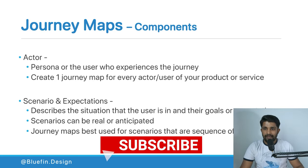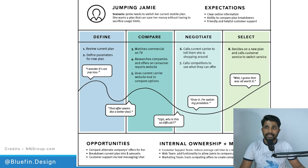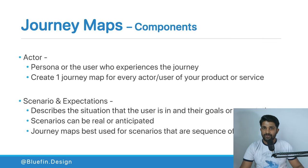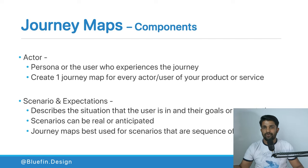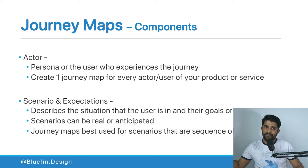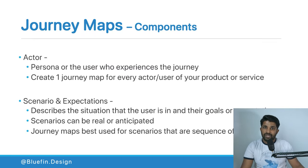The next component is the scenario and the expectation. The scenario is the situation that the user is actually in, along with their goals. These scenarios can be real if you're working on an existing project, or an anticipated scenario if you're working on a new product altogether. Journey maps are best used for scenarios that are a sequence of events — where the journey is broken down into different phases.